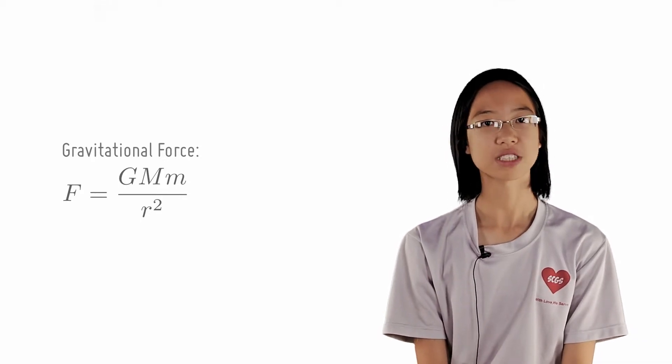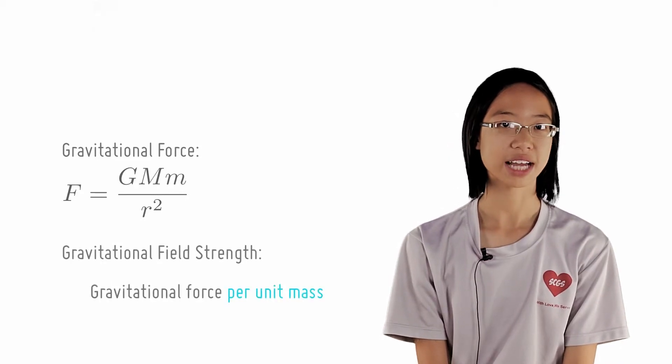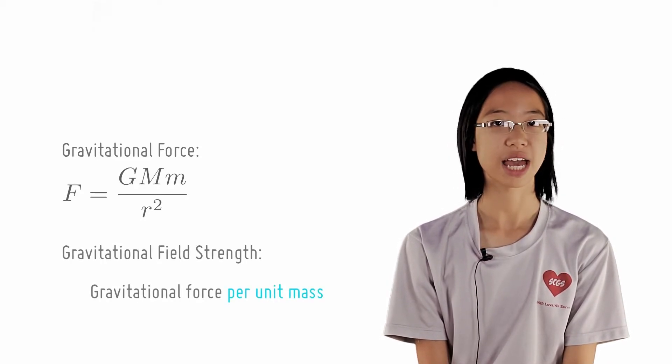Simply put, gravitational field strength at a point is the gravitational force per unit mass acting on a small mass placed at that point.